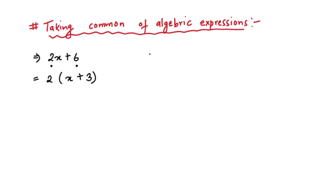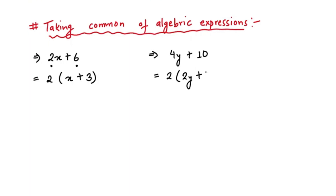Let's look at a similar example: 4y plus 10. What's the highest common factor of 4 and 10? It's 2 — 2 can divide both 4 and 10. So we take 2 as common. 2 times 2 is 4, so we write 2y, plus 2 times 5 is 10. That's how we take common of numbers.